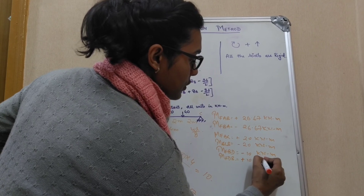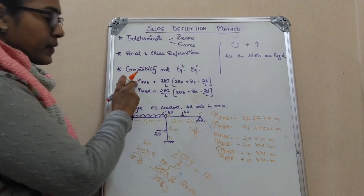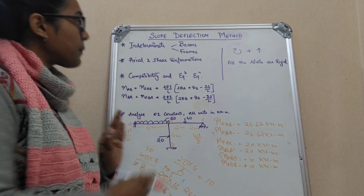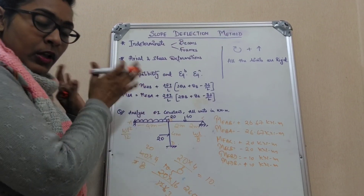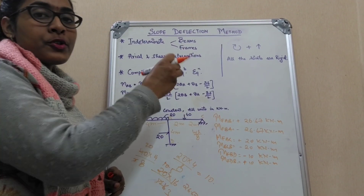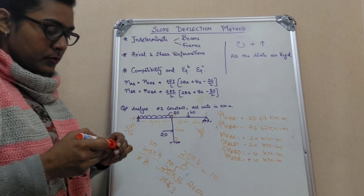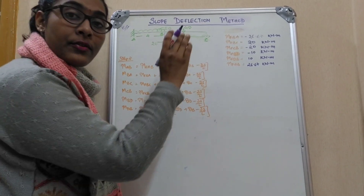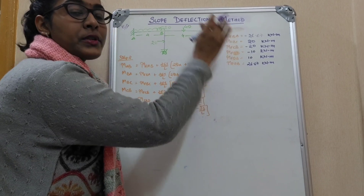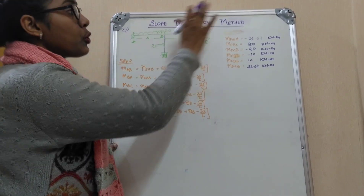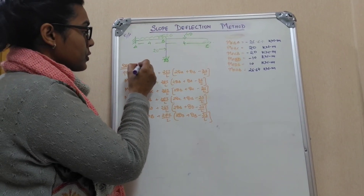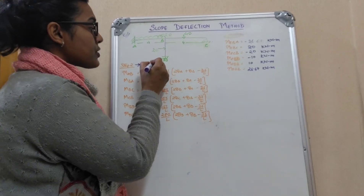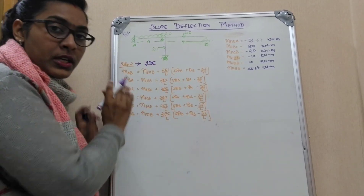After identifying the fixed end moments, we move to the second step: writing the slope deflection equations. We will write down all the equations and substitute all the values into them.